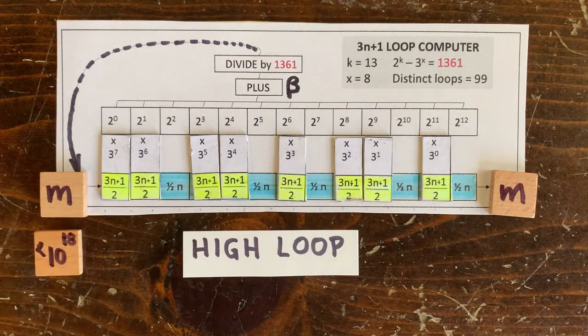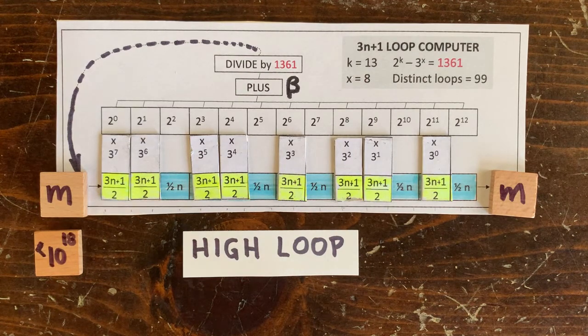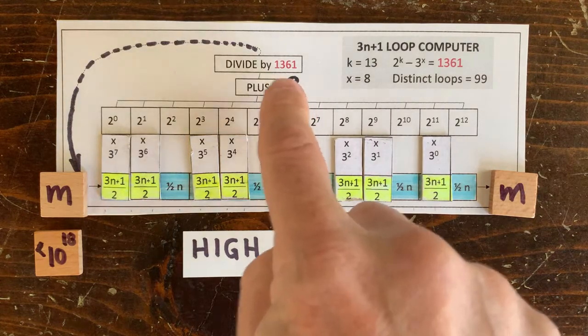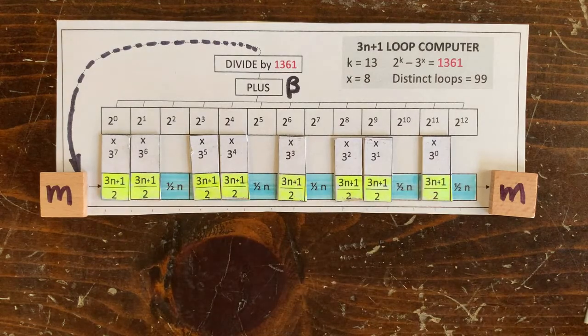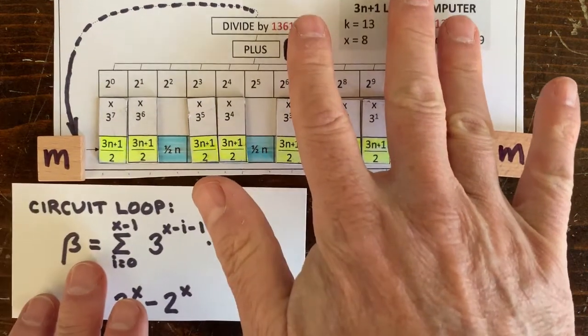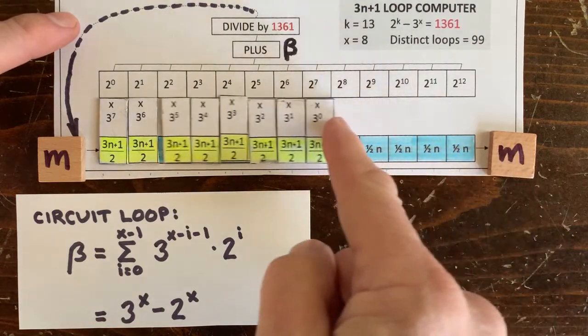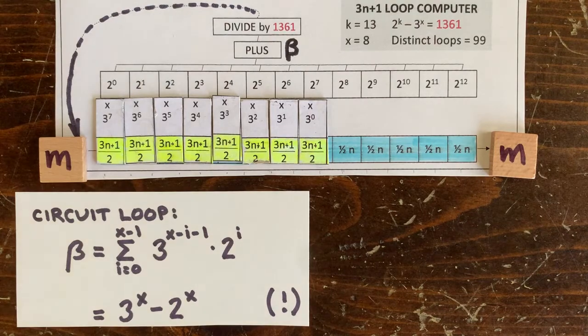That is, if there's a 3n plus 1 loop out there somewhere, how long would it have to be? So let's calculate beta over 2 to the k minus 3 to the x for the high loop. Remember, for the circuit loop, the sum of products of the powers of 2 and 3 amazingly simplified to 3 to the x minus 2 to the x. So what's the beta for the high loop?